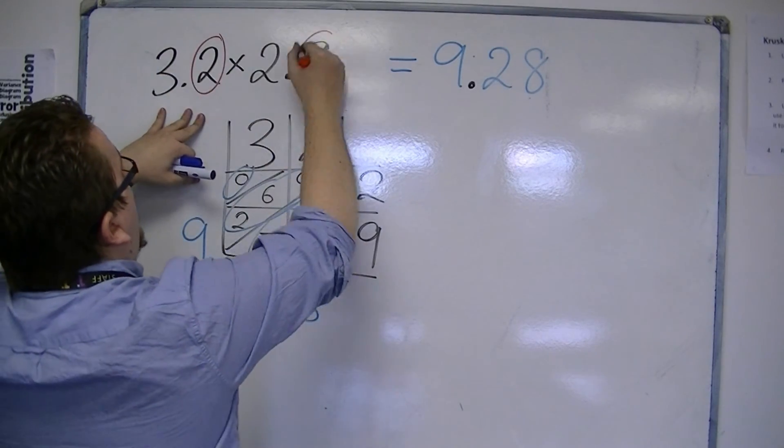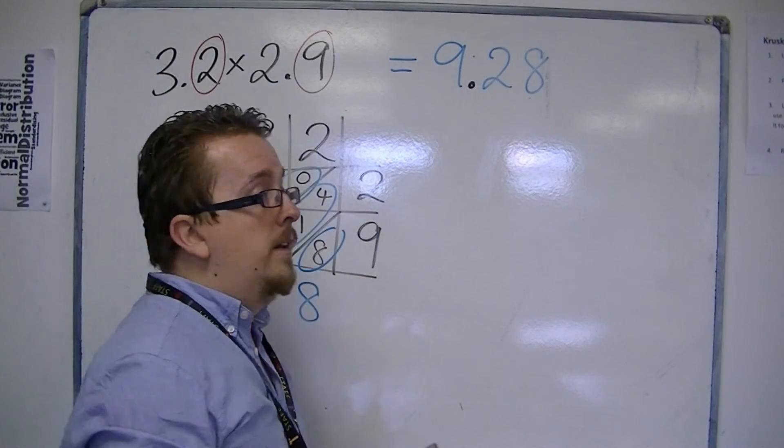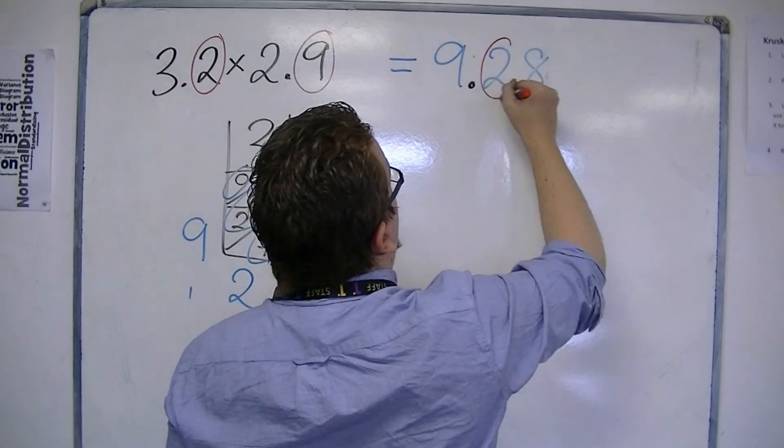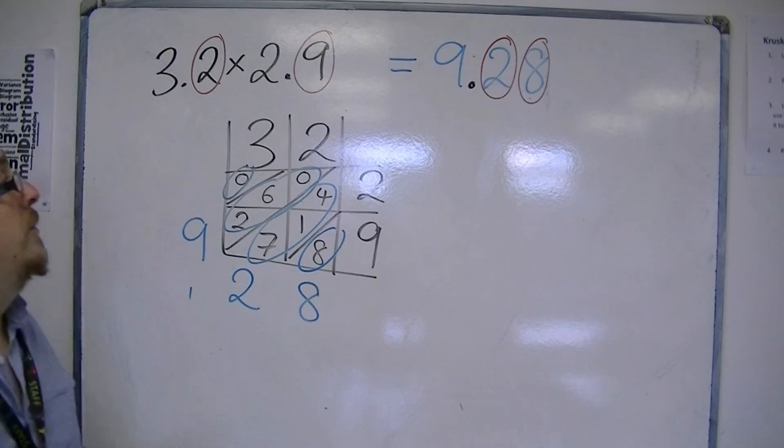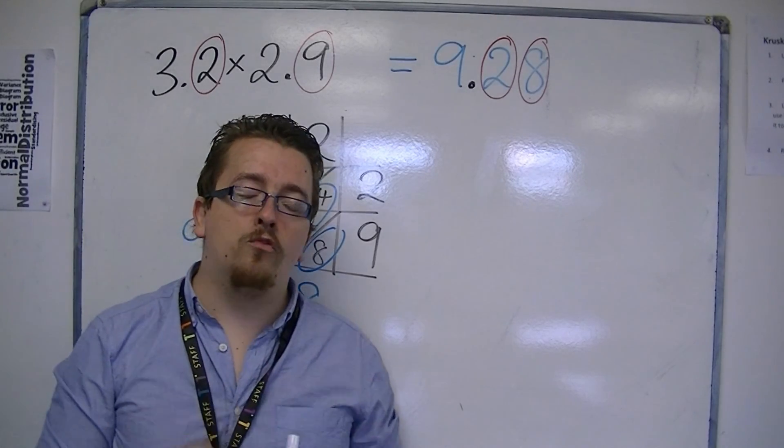So in the question we have 1 decimal place and 1 decimal place. So on the right hand side we should also have 2. So that makes sure that the decimal point is in the correct place.